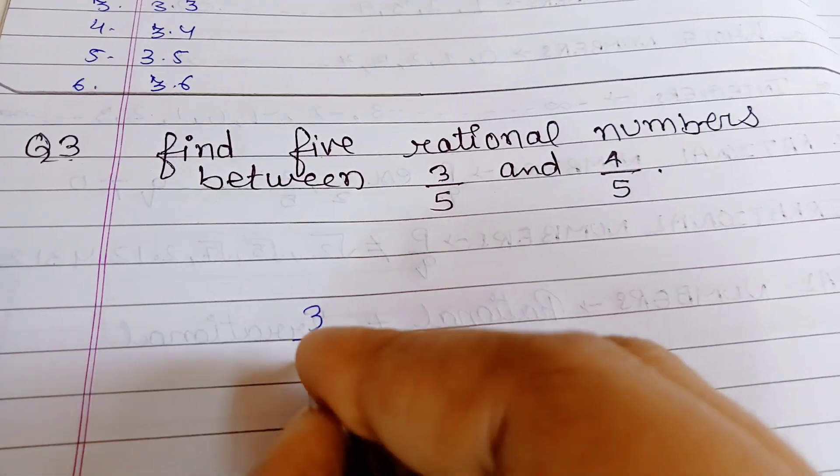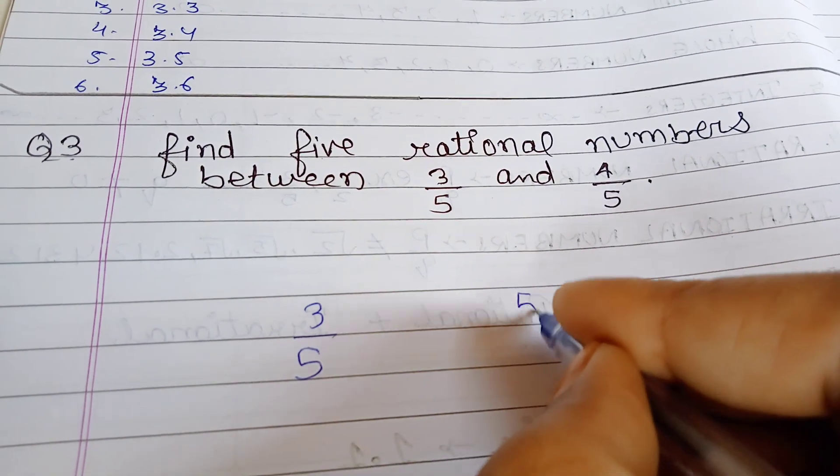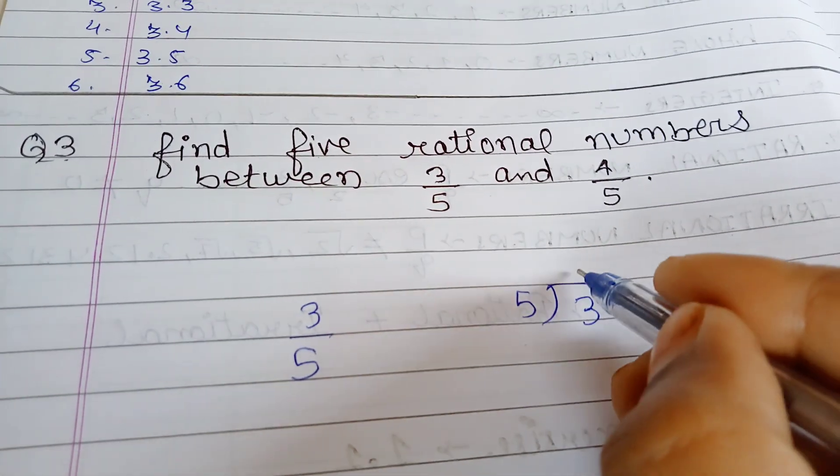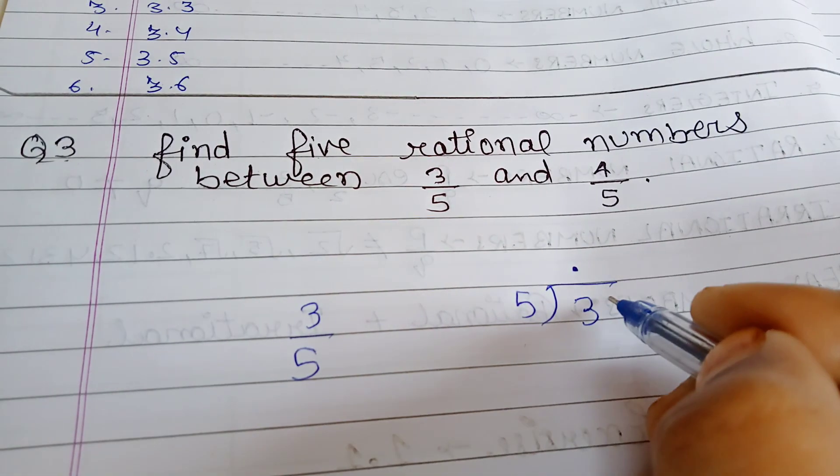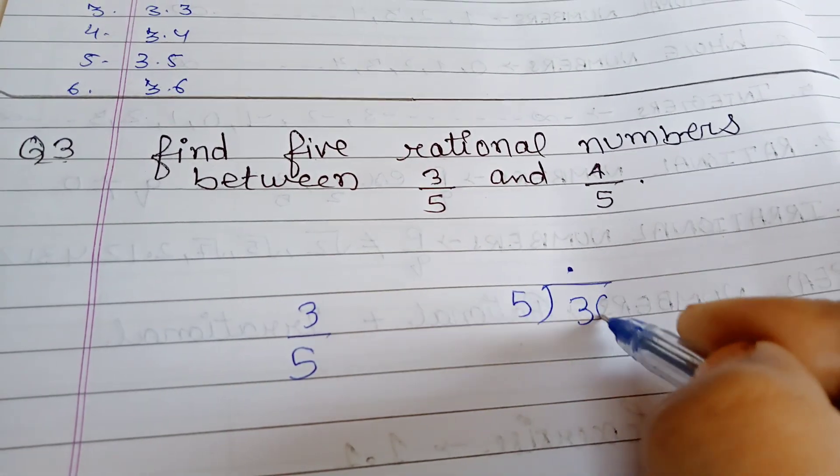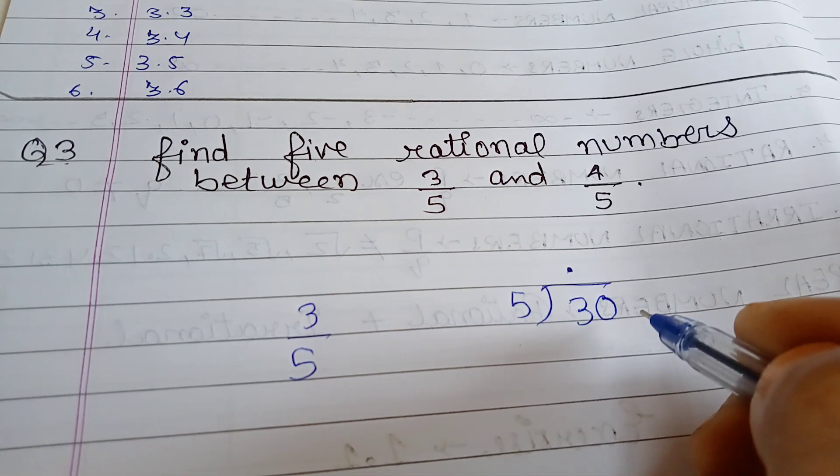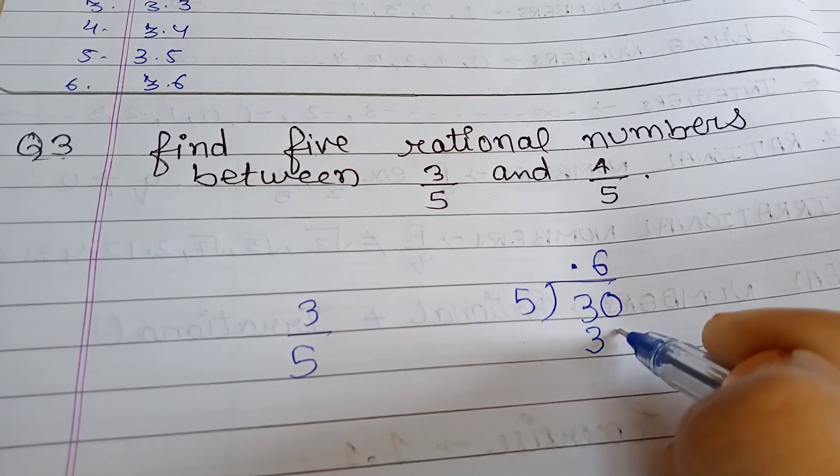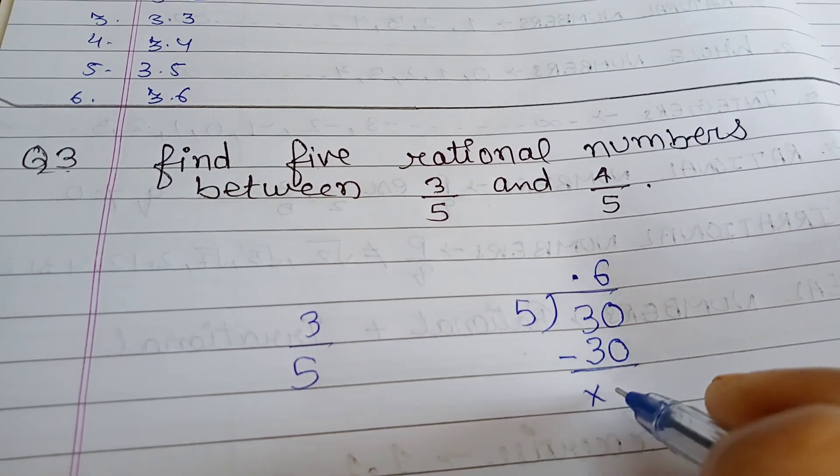We will solve 3 by 5, or we will divide 3 by 5. Because 3 is small, so we will add decimal after, we can add 1 zero. Now we will take table, in the table 6 times 30. Minus 30.